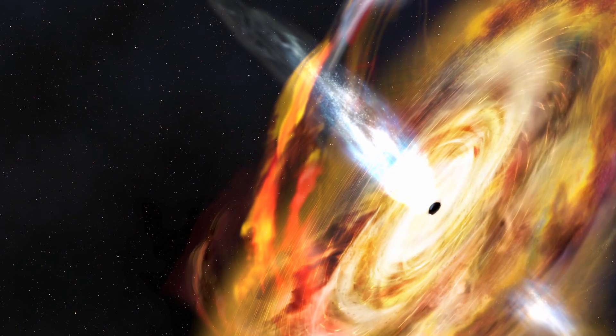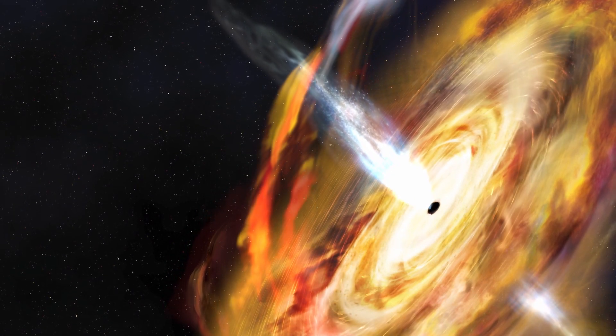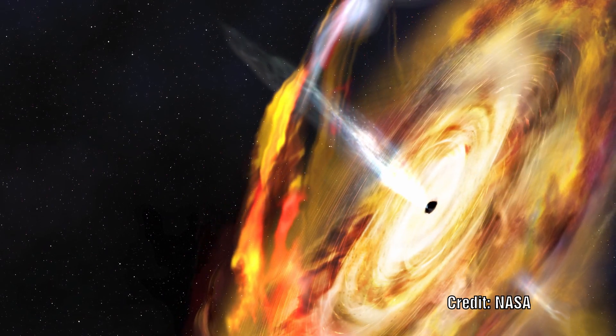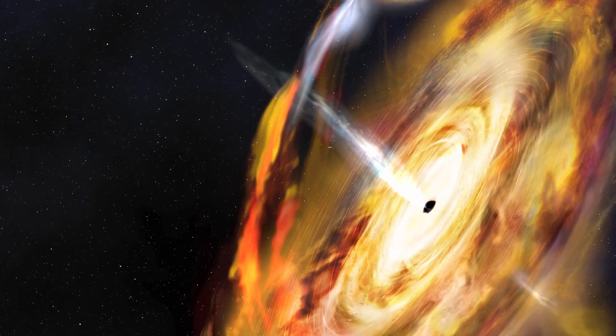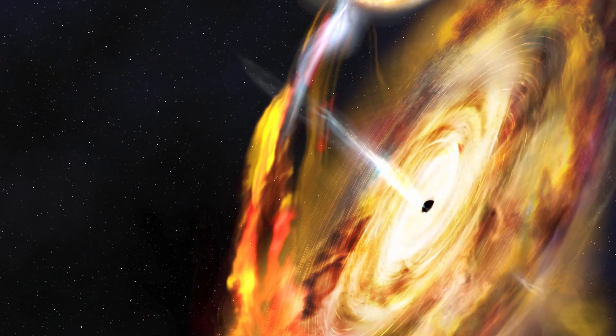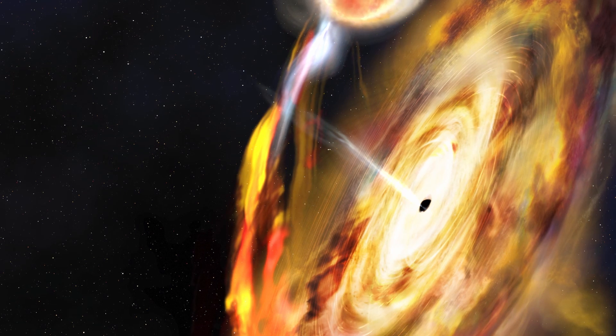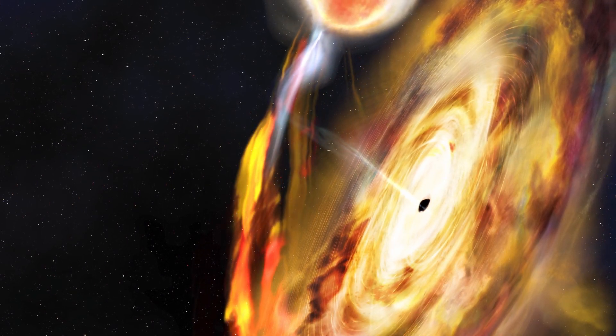We know that the current theory is that at the heart of galaxies sits a supermassive black hole. These can either be dormant or can be feeding on material, in which case these are referred to as active galactic nuclei. But what happens when multiple galaxies collide?